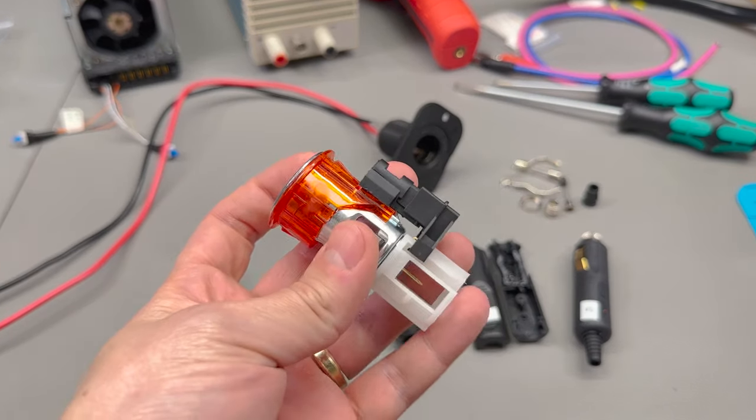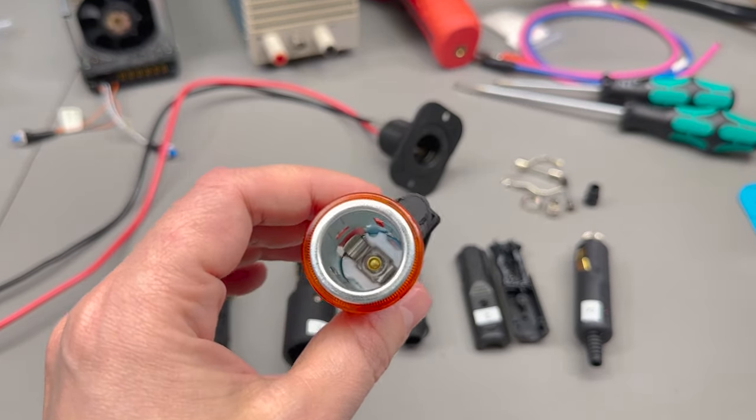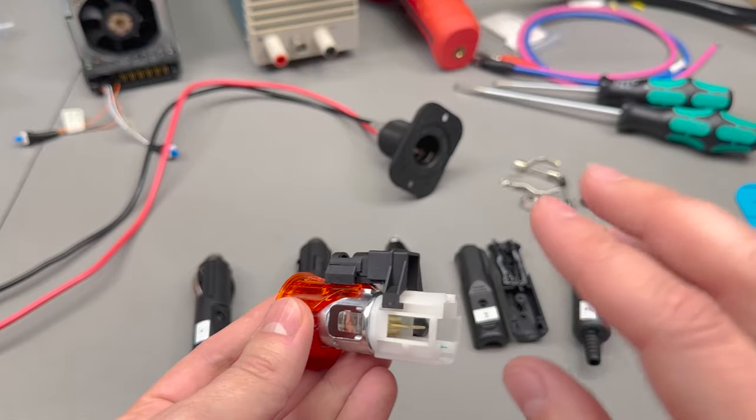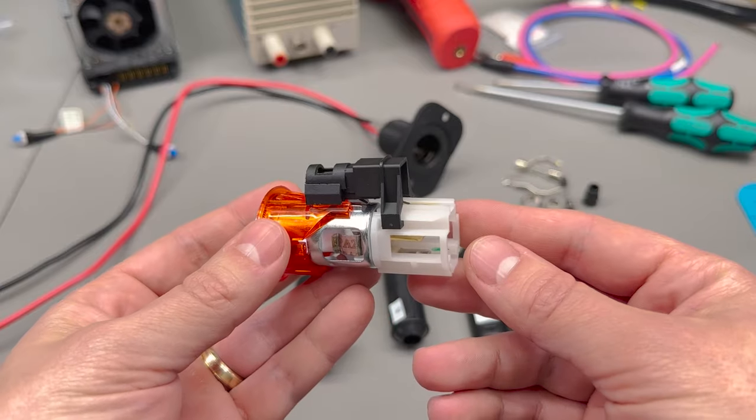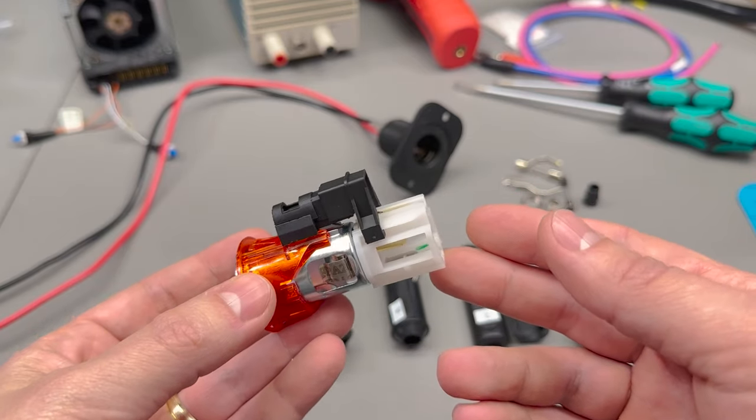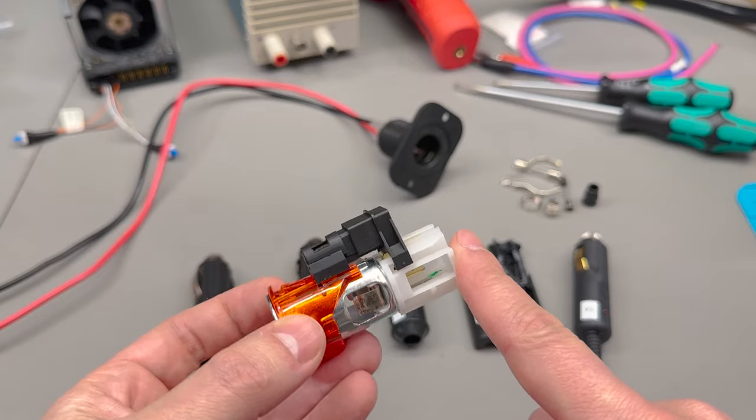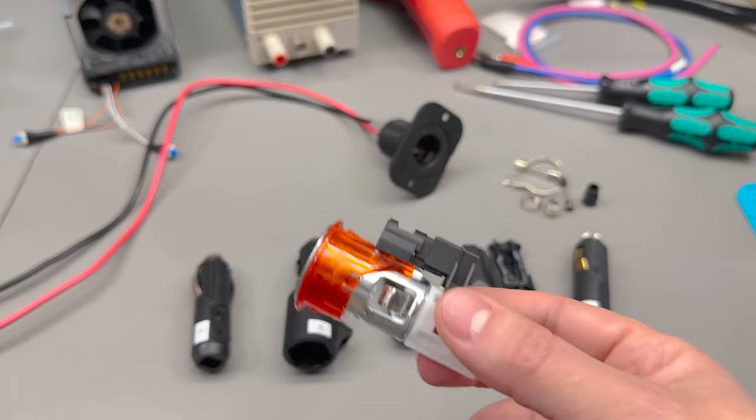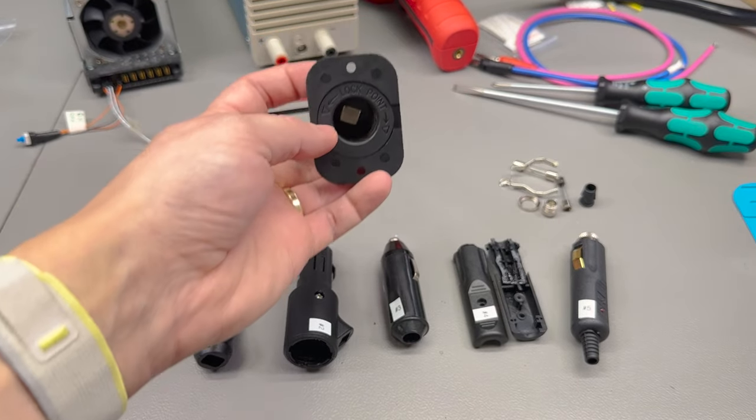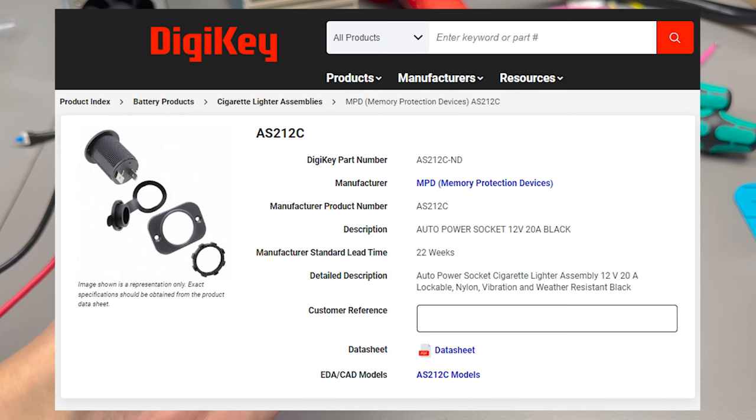At first I wanted to use this VW OEM automotive female socket, but there is no specific amps rating printed on this and the fuse that protects this output on the car has a rating of 20 amps, so we might be pushing this little guy to its limits at 20 amps.